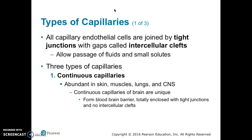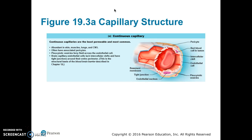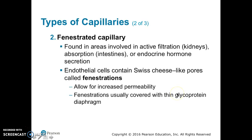Continuous capillaries are abundant in the skin, muscles, lungs, and the central nervous system. Continuous capillaries in the brain are unique because they form the blood-brain barrier and do not have intercellular clefts. Here is an illustration of a continuous capillary with a pericyte on the outside and an intracellular cleft — which tells us this is not in the brain, since the brain does not have intercellular clefts.